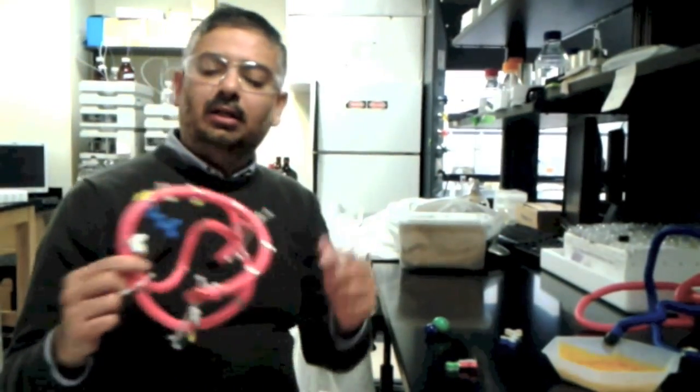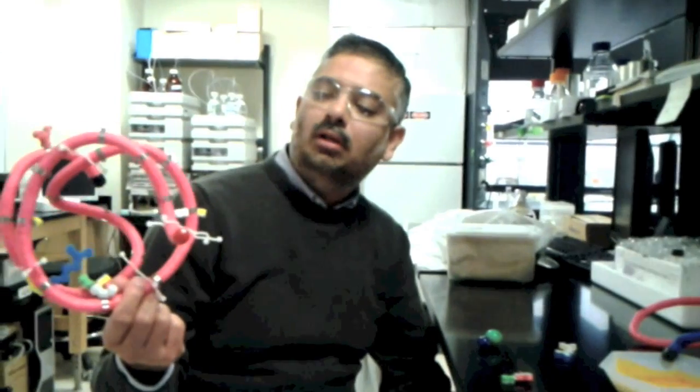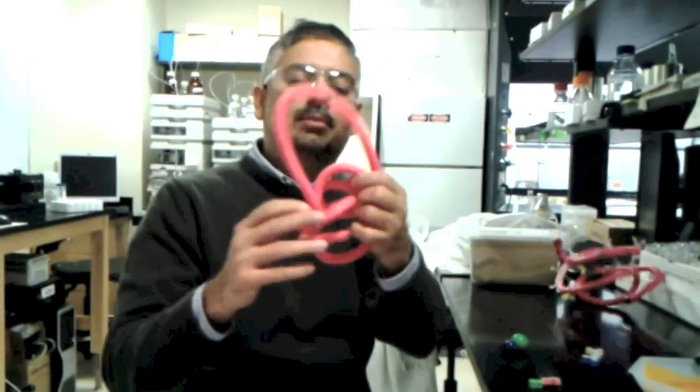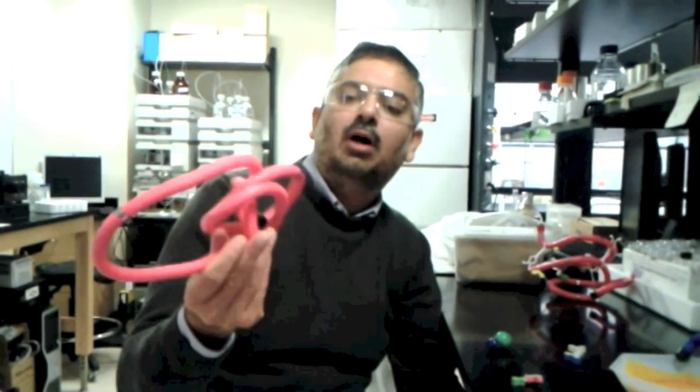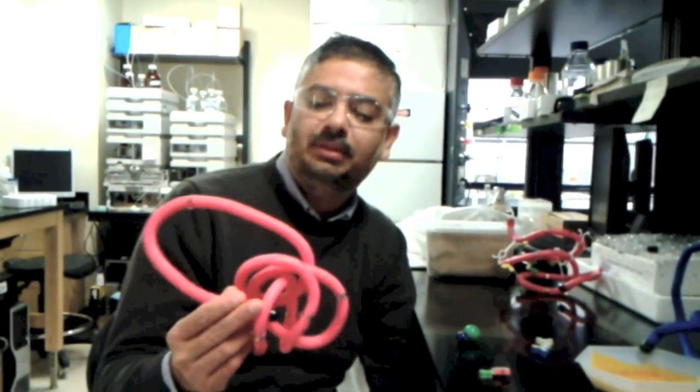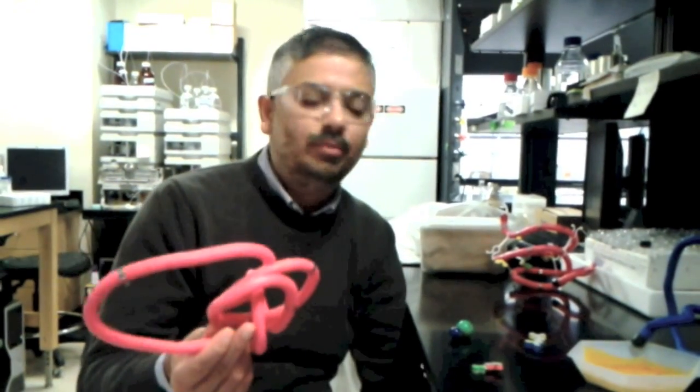The result is simply instead of having a viable structure that looks like this, you have a misfolded structure that might look like this which is biologically dysfunctional. So chemical modification through reactive oxygen species or free radicals can lead to misfolding.